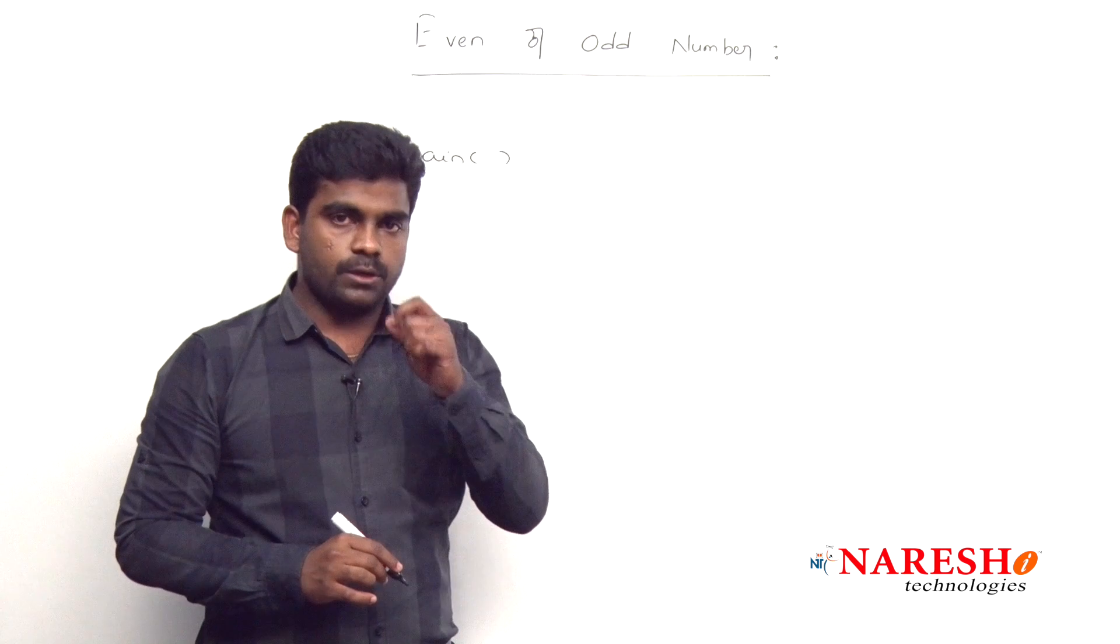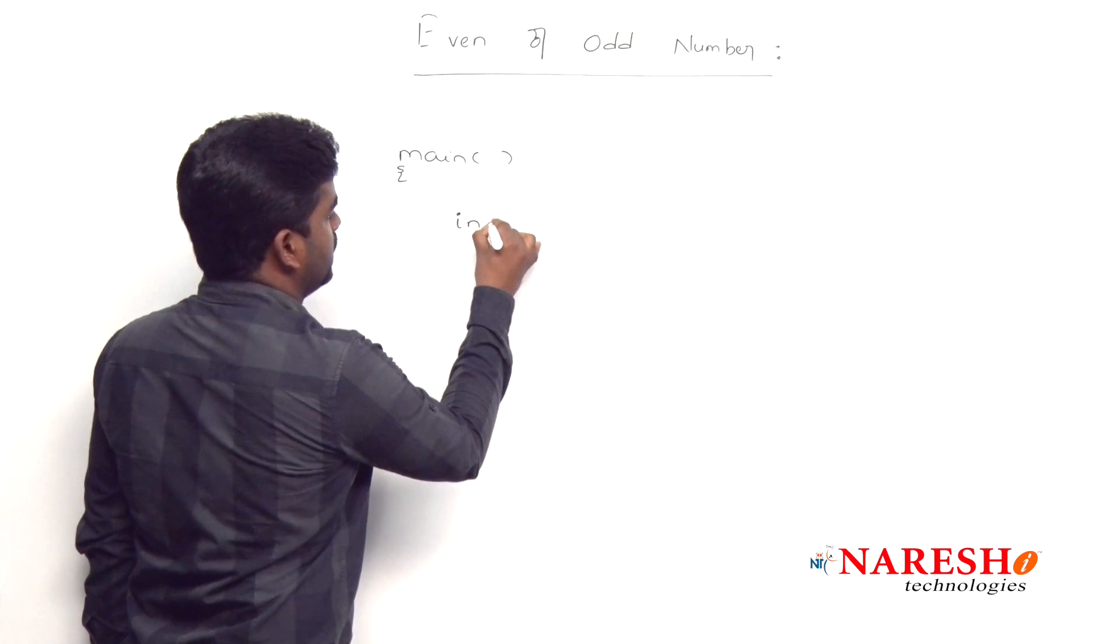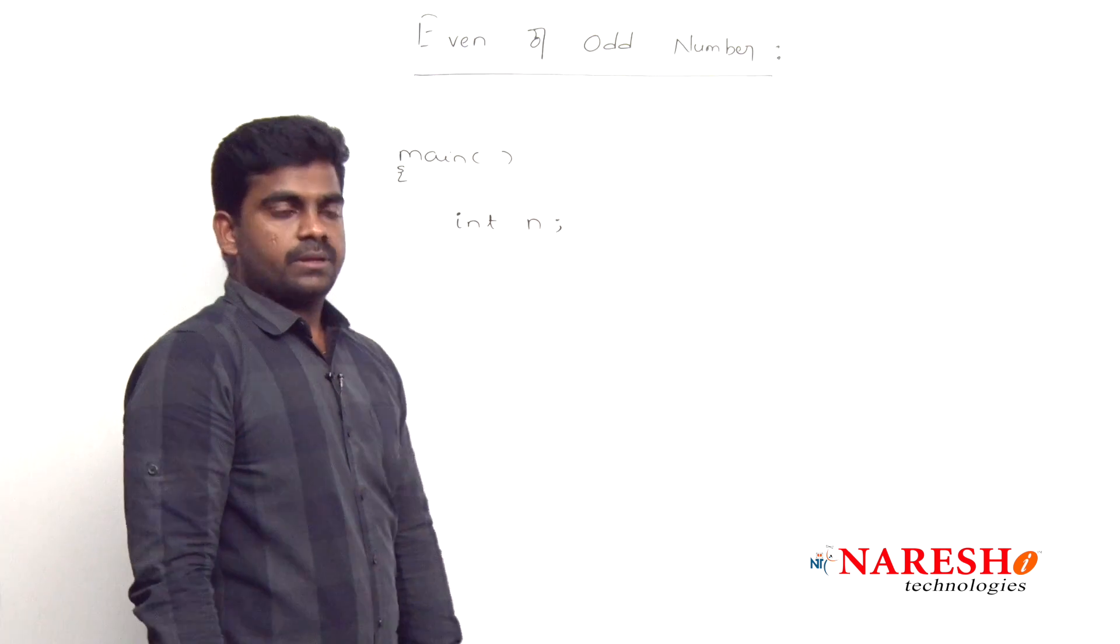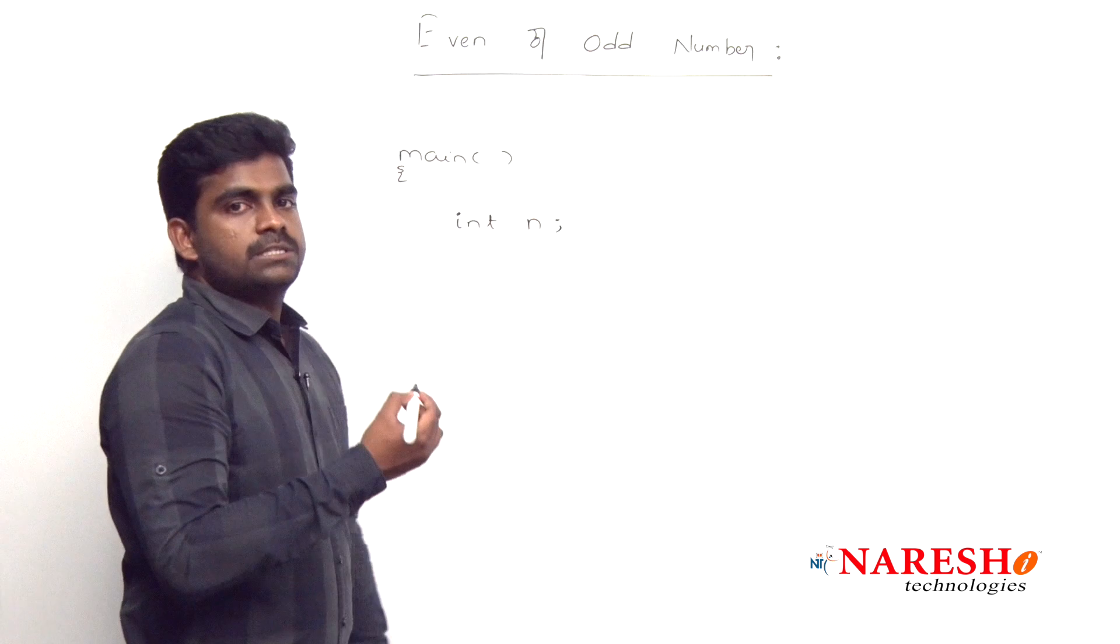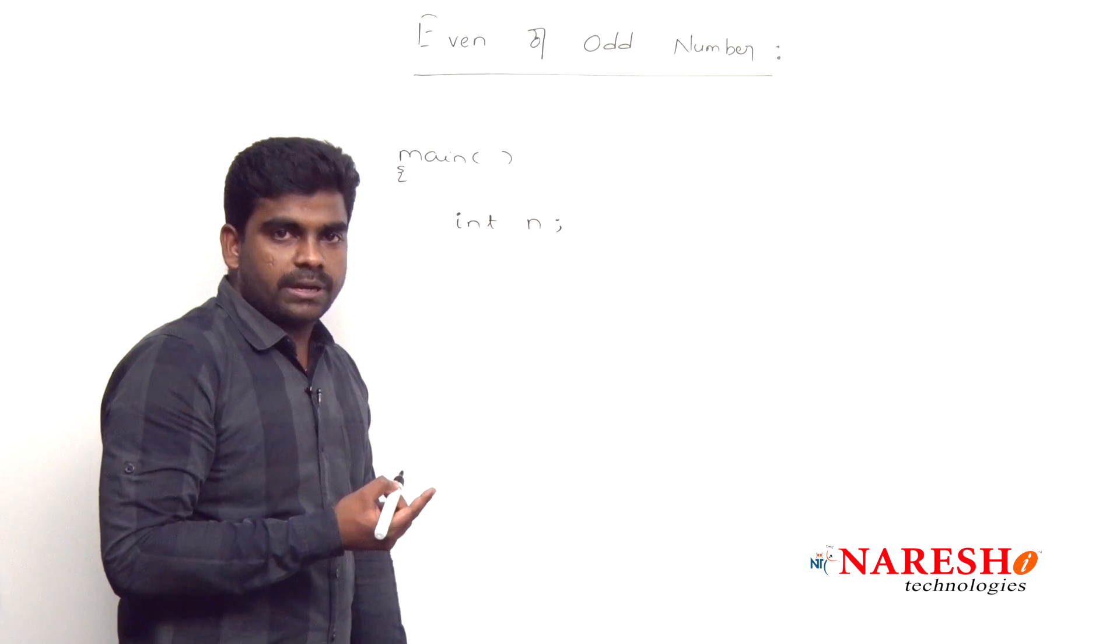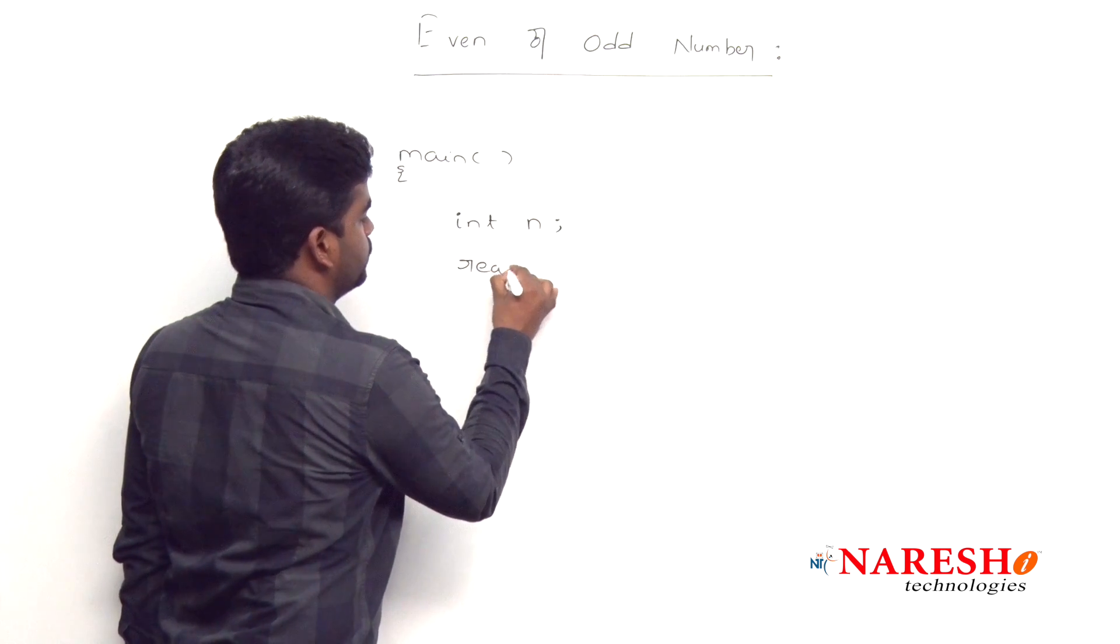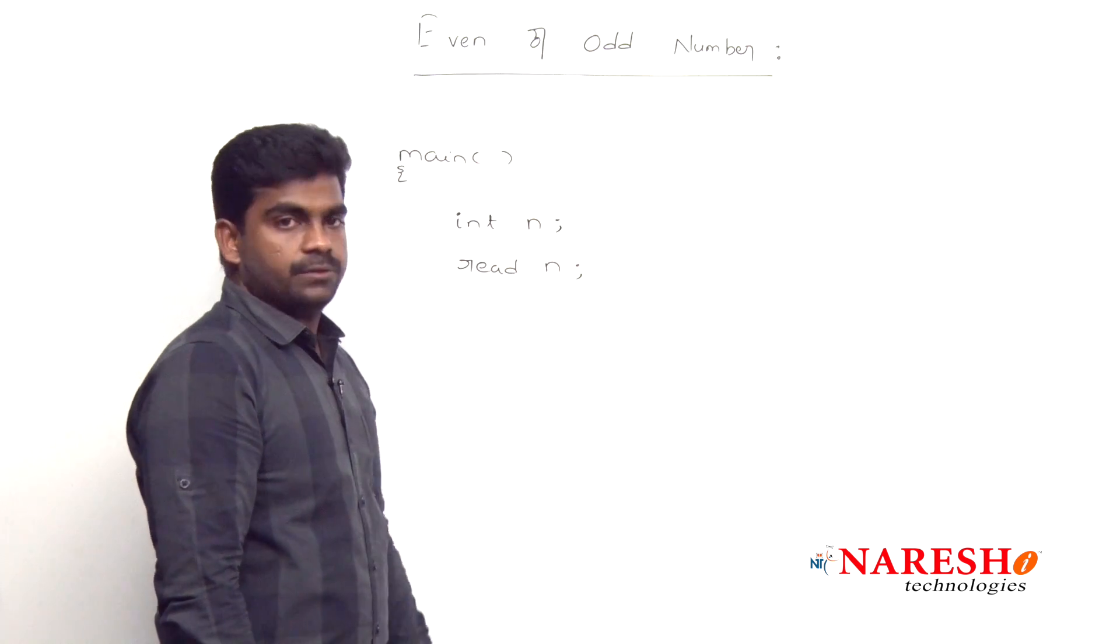Here even or odd number, to find that even or odd, first we are reading one number, suppose n is a number. How to read that number? Instead of writing printf and scanf function in every logical program, simply I am writing read n value. Just like the flowchart, we are writing that read n value.